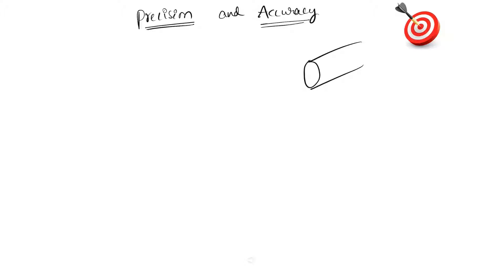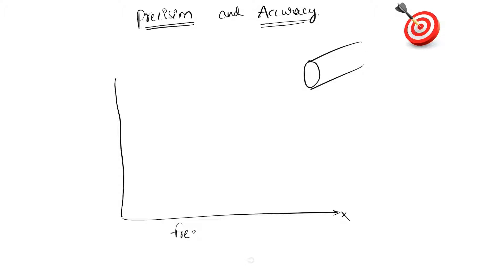Let me take a shaft. I'm going to measure this shaft a couple of times and plot those values on a graph. On the x-axis I'll take the number of measurements, and on the y-axis I'll write the dimensions. So these are the number of measurements I am going to take, and these are the dimension values I got in each measurement. I am going to measure the same component with the same instrument multiple times.